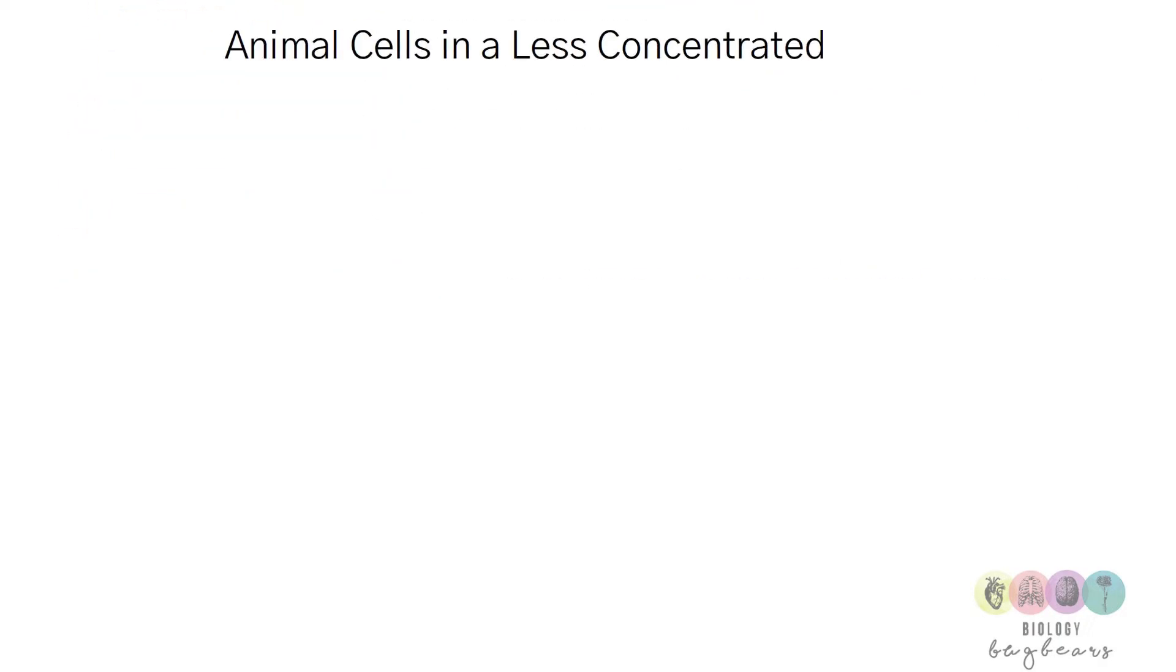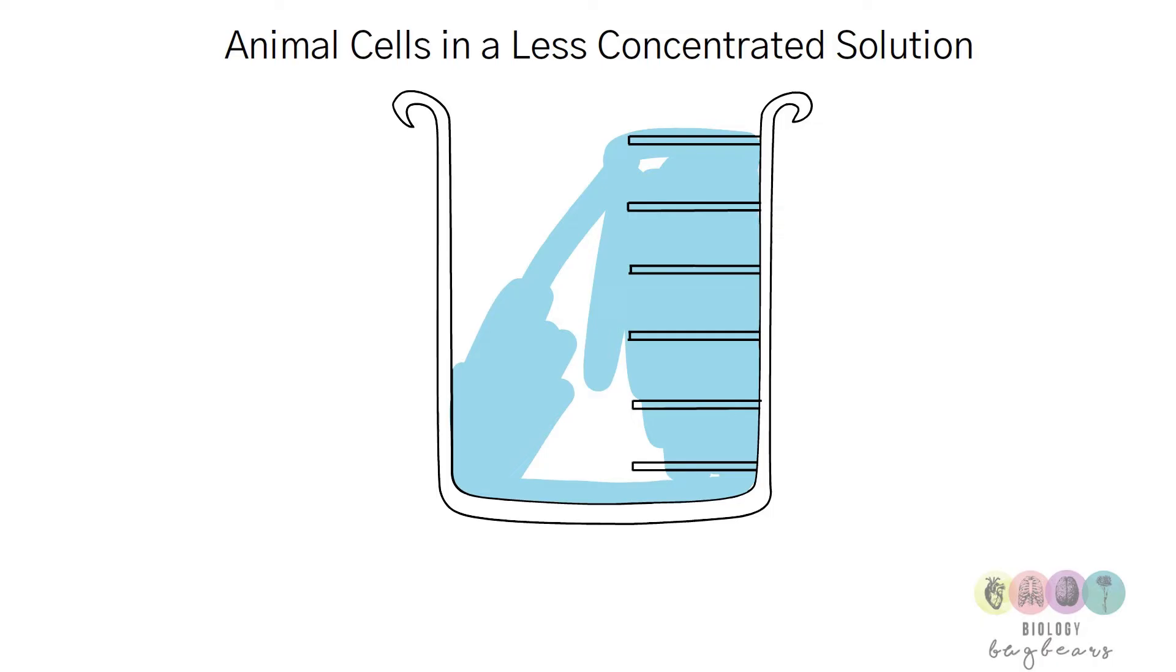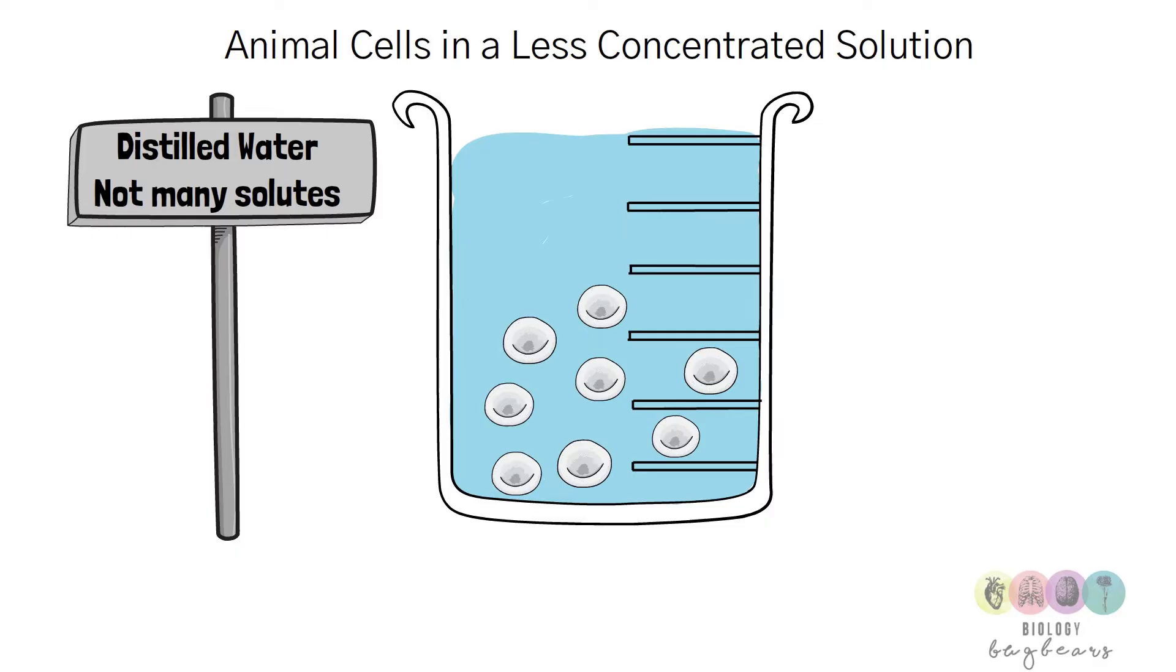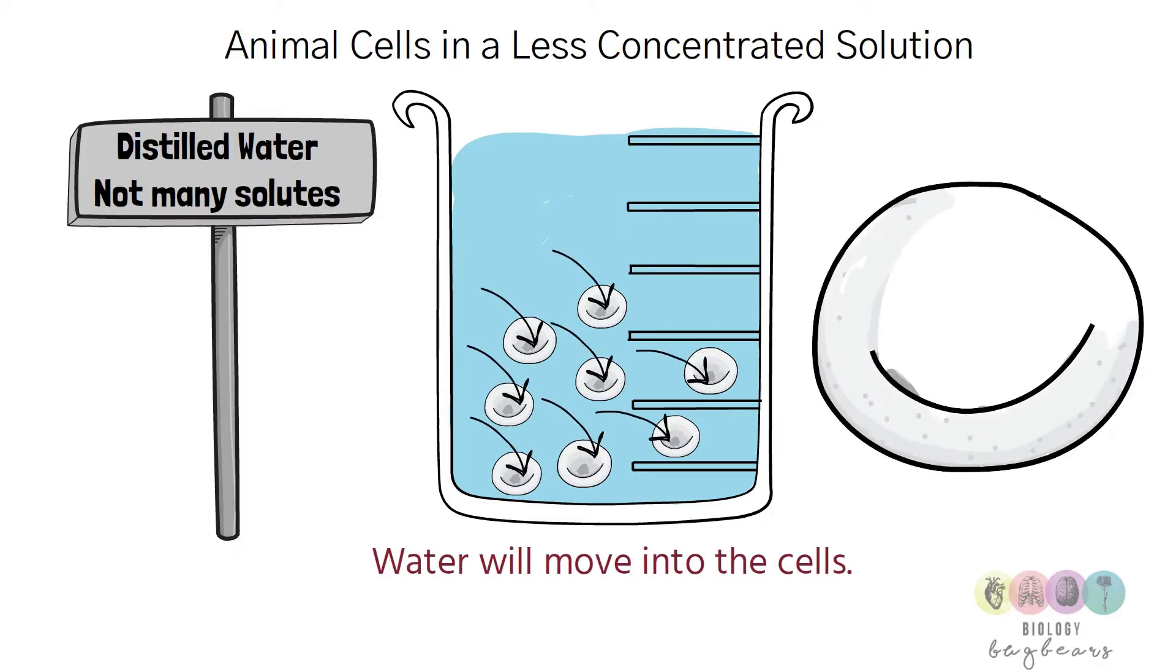If you place animal cells in a less concentrated solution, by less concentrated we mean very watery, so high water concentration like distilled water, water will move from where there's lots of it in the beaker to where there's less of it in the cytoplasm of the cells. And if too much water moves in, well then the cells may burst and that's a risk.